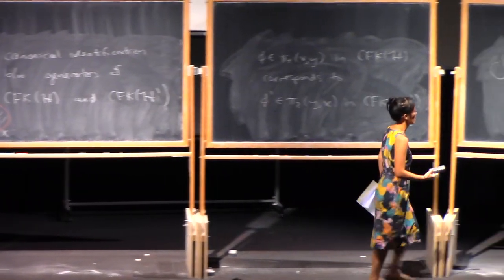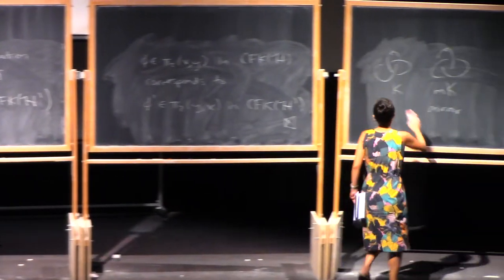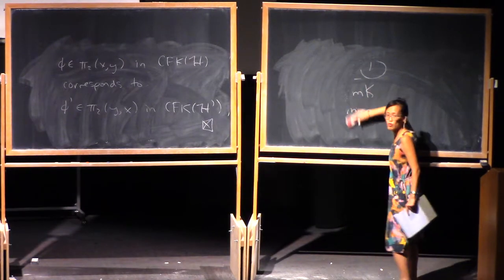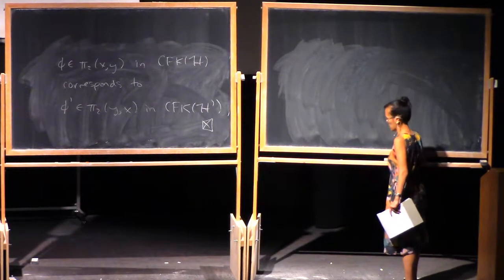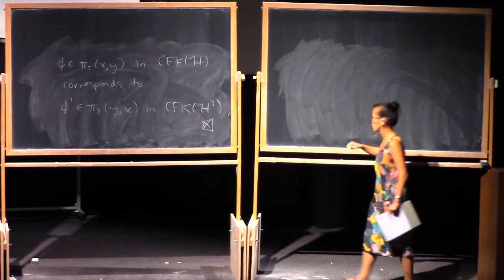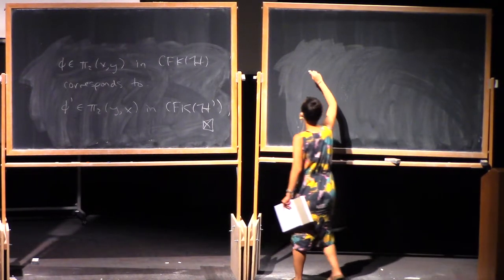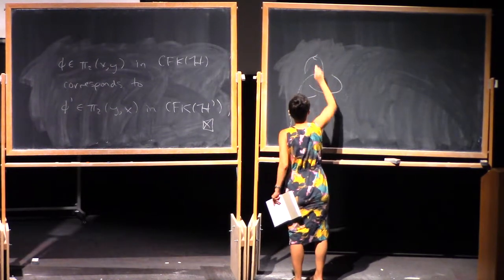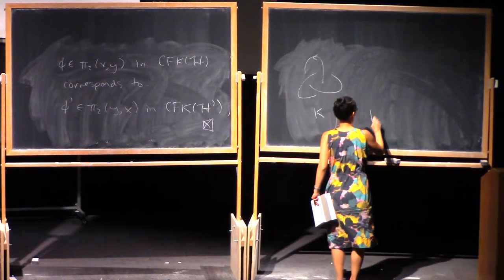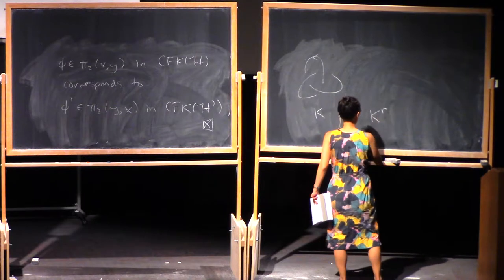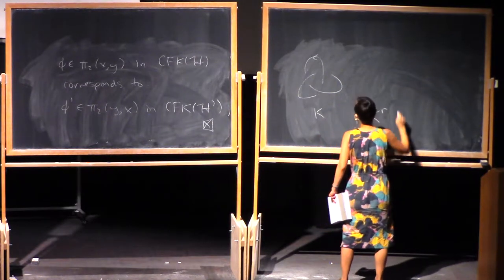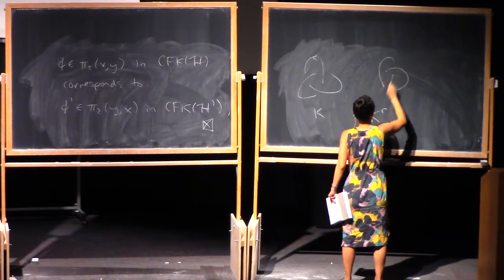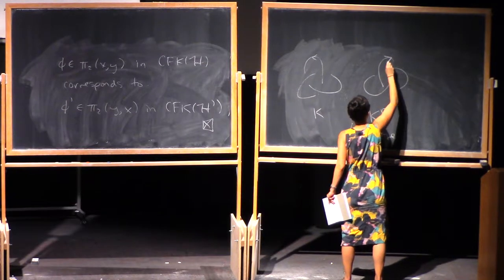What's another thing that people like to do to knots? You can take the reverse of K, which is to reverse the string orientation. So you keep the crossings the same and just change the string orientation.